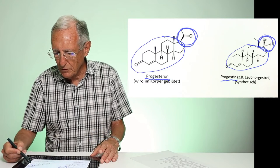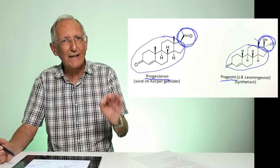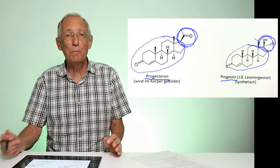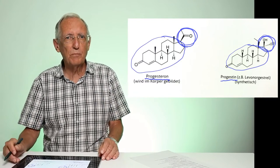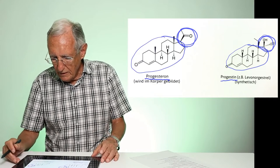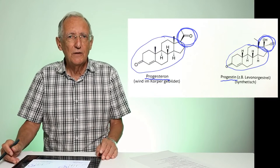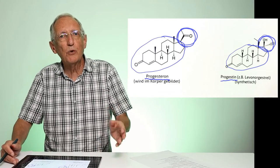These synthetic progesterones have fantasy names. Here, for example, Levonorgestrel, or one of the commonly used is Medroxyprogesterone Acetate. These drugs or substances appear in birth control pills, hormone pills, hormone patches and so on.